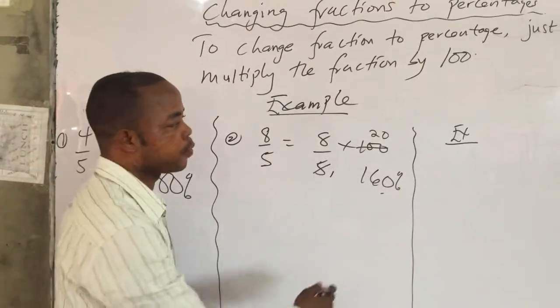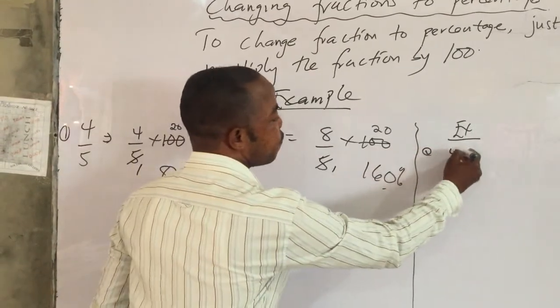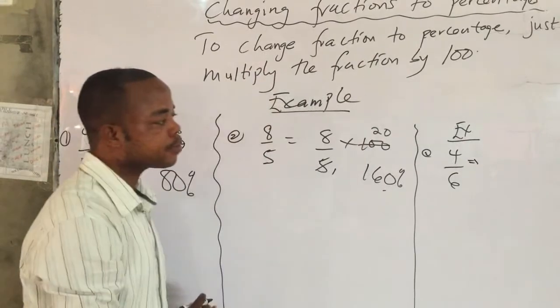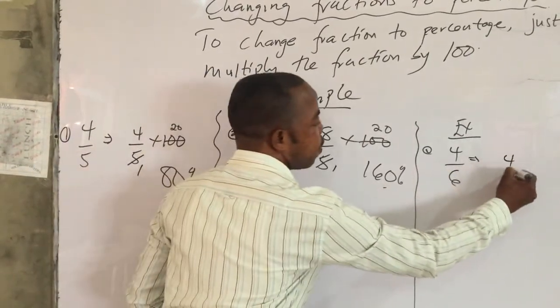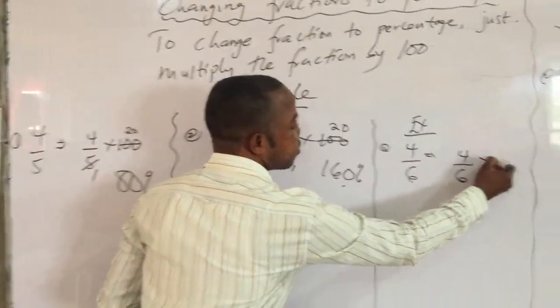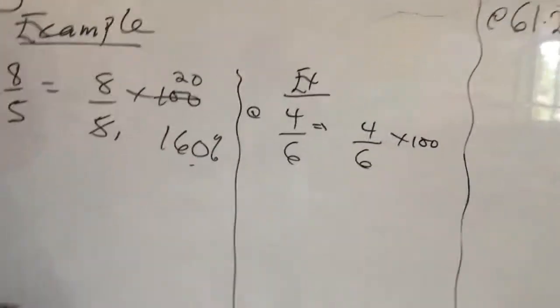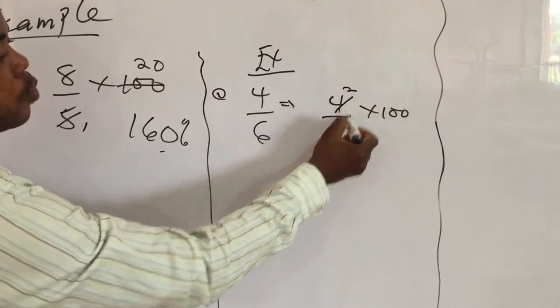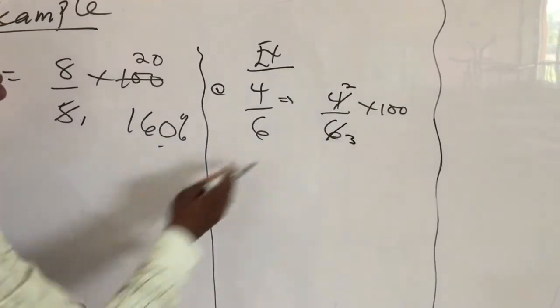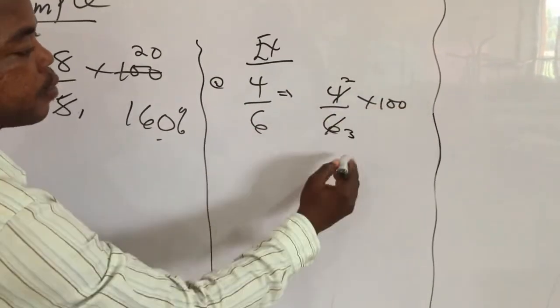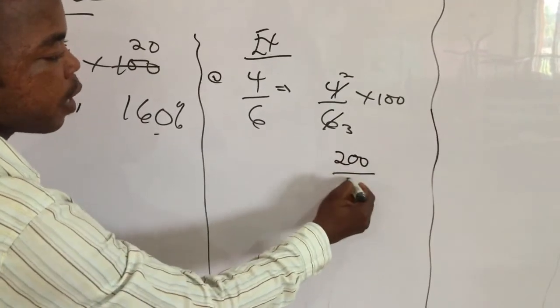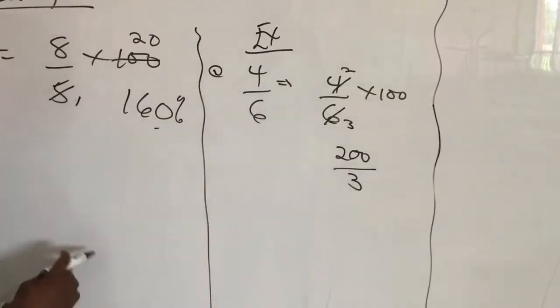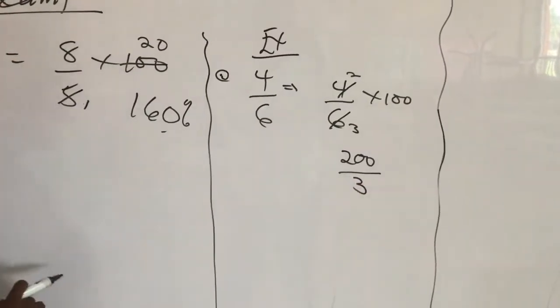Let's take the last example. If I have 4 over 6 into percentage. So I have 4 over 6 times 100. We can break it down here. 2 goes here, maybe 2. 2 goes here, 3. Then we multiply 2 times 100. We get what? 200 over 3. We don't leave an answer in this way. We change it to decimal so that we can write it as percentage.